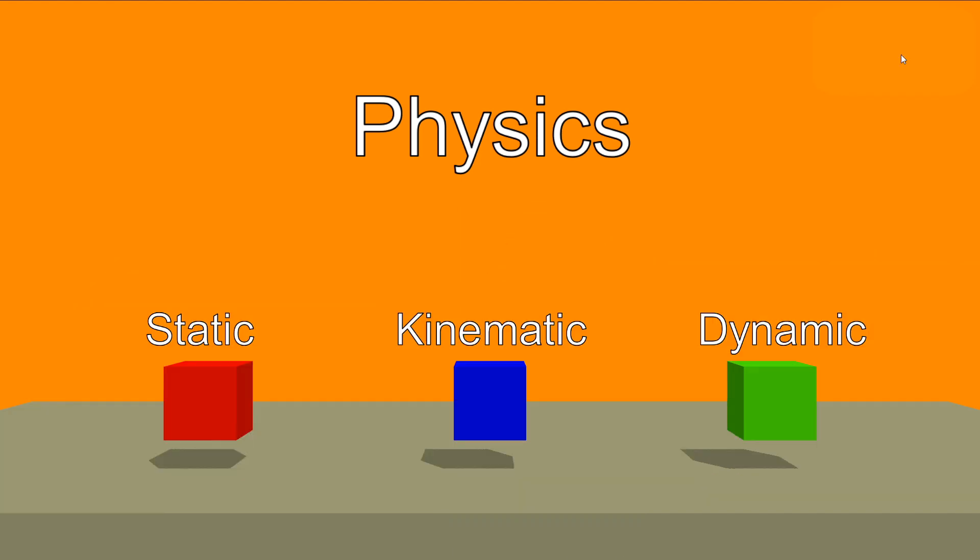The three types of physics commonly used in game engines are static. We shouldn't have any movement and it wouldn't respond to any force. All it would do is allow other objects to collide with it.